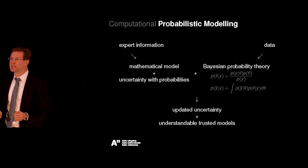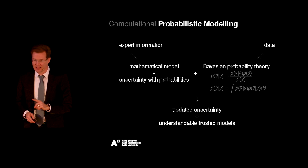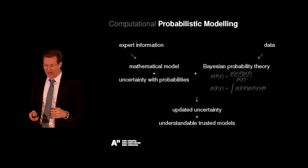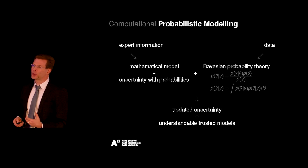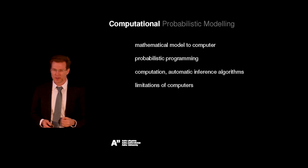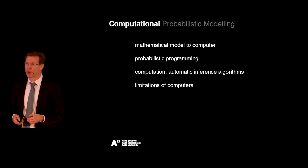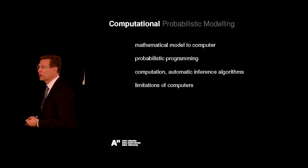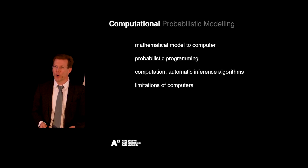In theory, using Bayesian probability theory is easy — if only we could do these calculations exactly. Unfortunately, especially the integrals are so challenging that we are not able to do that. But we can break these computations into many smaller pieces and give them to a computer — that's the computational part. We need to transform this mathematical model into a computer program, which we can do using a probabilistic programming language designed for describing these probabilistic models. These frameworks also include automated inference, so the user can focus on describing the model.